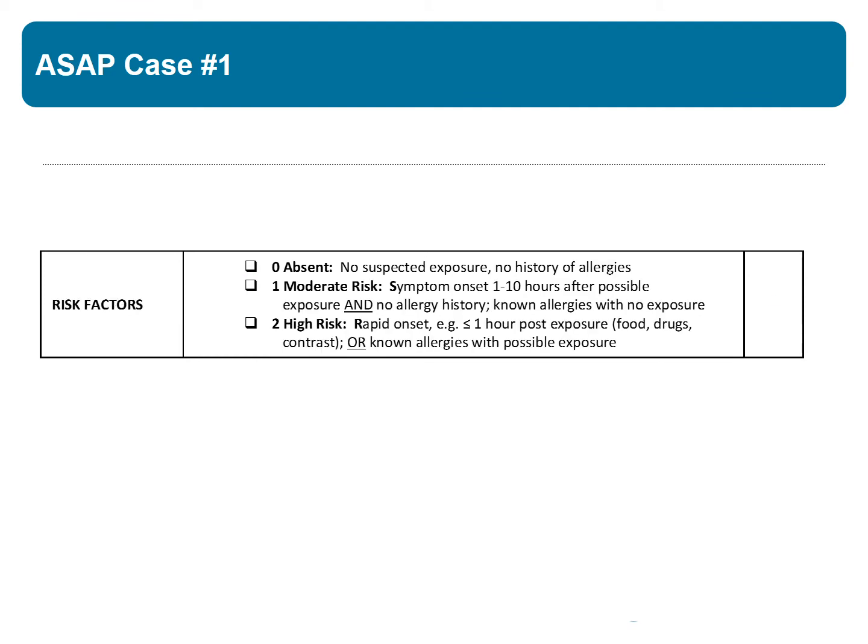For risk factors, he had a rapid onset of symptoms after a food exposure with development of rash within an hour, and he also vomited 20 minutes after that exposure. So we are going to give him two points for a high-risk exposure.